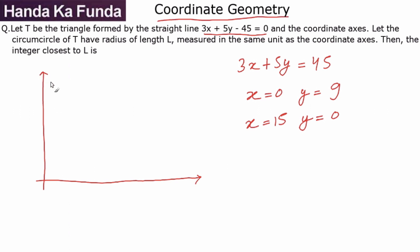So these are the coordinate axes, this is the origin O, and now I am given that my triangle is this particular line and the coordinate axes. So where will this line cut?